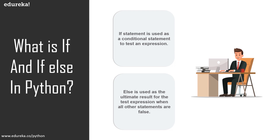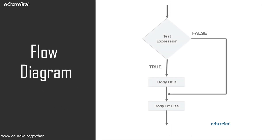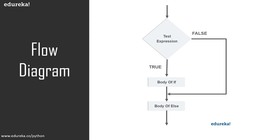We also have elif in Python, which is a subsequent statement with another test expression. If the if statement is false, execution moves to elif, and if elif is also false, execution moves to else. Looking at the flow diagram: when execution starts, the test expression is evaluated — if true, the if block executes; if false, execution goes to either the elif block or the else block.